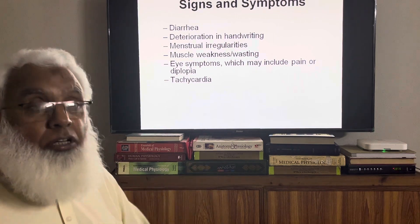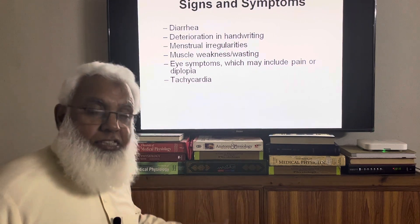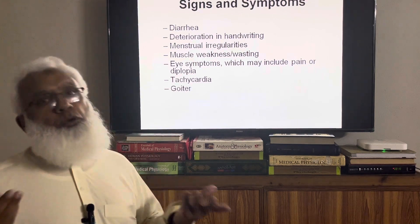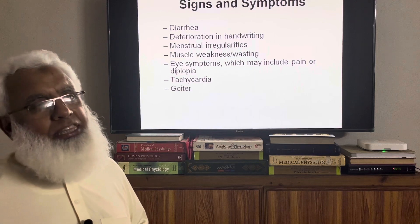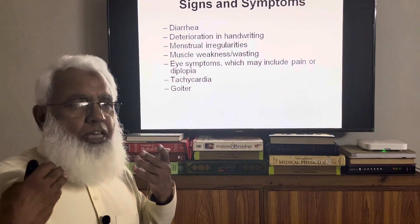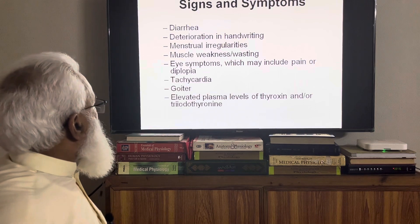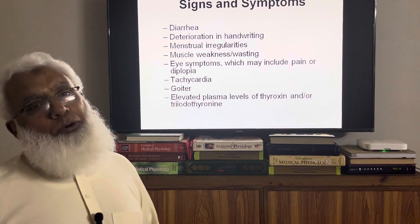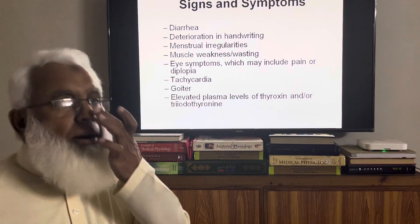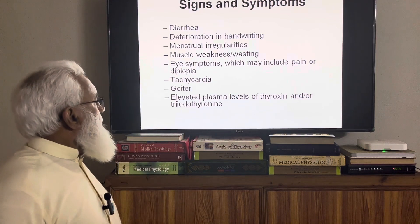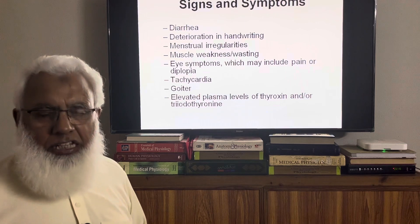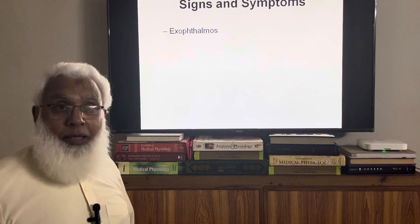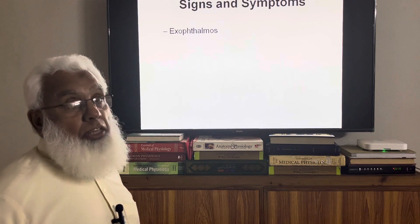Tachycardia — increased heart rate. When CVS is overactive, cardiac output increases and heart rate increases; systolic blood pressure may increase while diastolic pressure decreases. There will be tachycardia. Goiter is also both a sign and symptom the patient may report. Elevated plasma level of thyroxine is a diagnostic sign that we will measure.